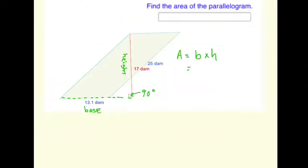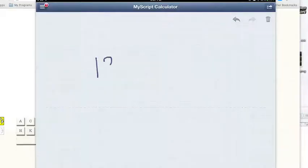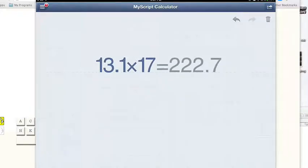So that tells us that the base is 13.1 decameters, and the height is 17 decameters. So the base times the height is going to be 13.1 times 17. So it's handy dandy calculator time. So that gives us 222.7.